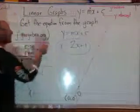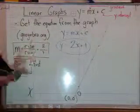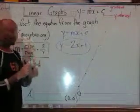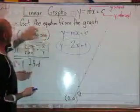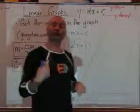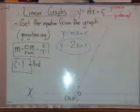And the equation of that line is y equals 2x plus 1. Y intercept is 1 and the gradient was 2. Now you know how to find the equation of the line if you're given the graph.